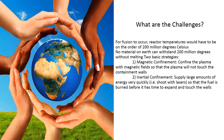For fusion to occur, reactor temperatures must reach on the order of 200 million degrees Celsius. No material on Earth can withstand 200 million degrees without melting. Two basic strategies exist: one, magnetic confinement — confine the plasma with magnetic fields so it does not touch the containment walls; two, inertial confinement — supply large amounts of energy very quickly (e.g., shoot with lasers) so the fuel burns before it has time to expand and touch the walls.